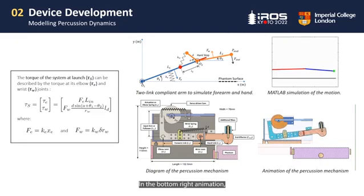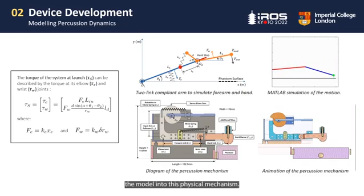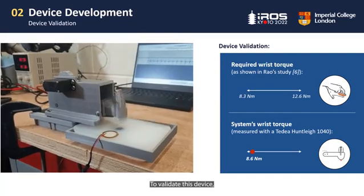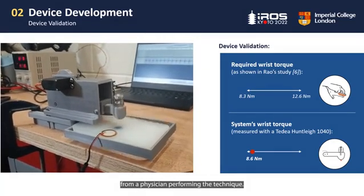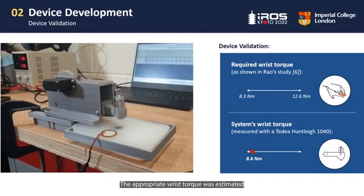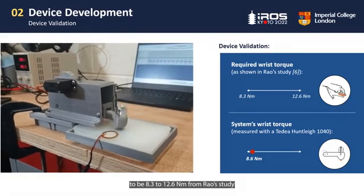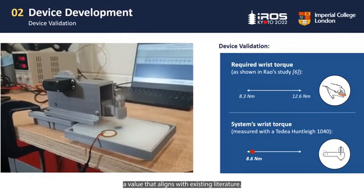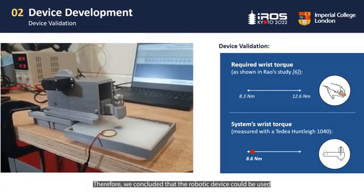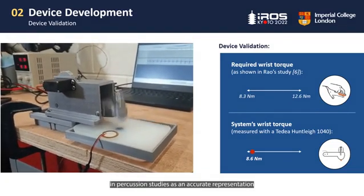In the bottom right animation, you can see how we translated the model into the physical mechanism. To validate this device, we compared its impact force to what is expected from a physician performing the technique. The appropriate impact torque was estimated to be 8.3 to 12.6 Nm from Rouse's study, and the device torque was 8.6 Nm, a value that aligns with existing literature. Therefore, we concluded that the robotic device could be used in percussion studies as an accurate representation of a physician's percussion technique.